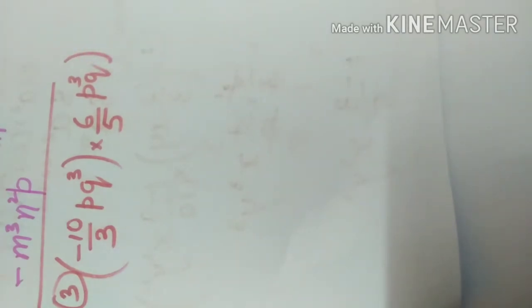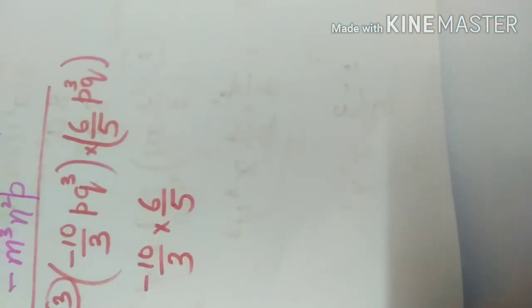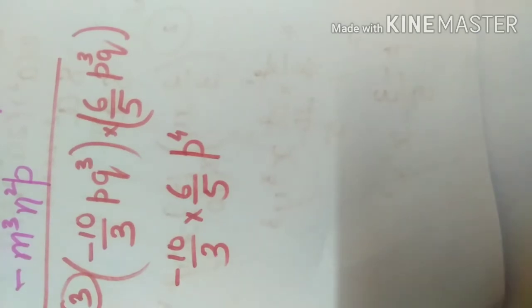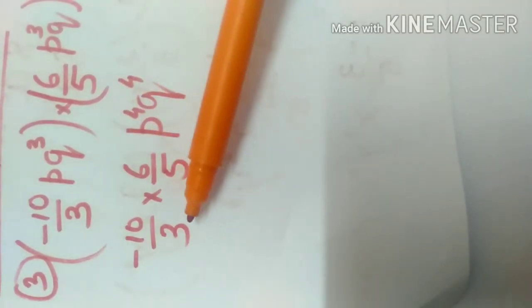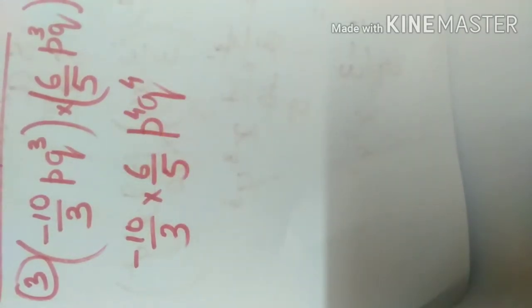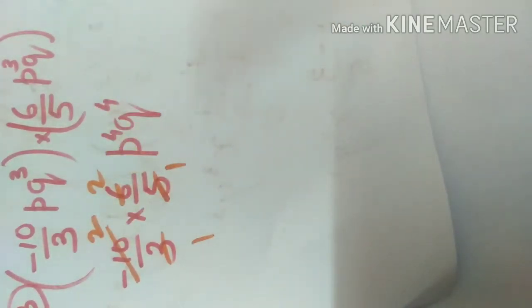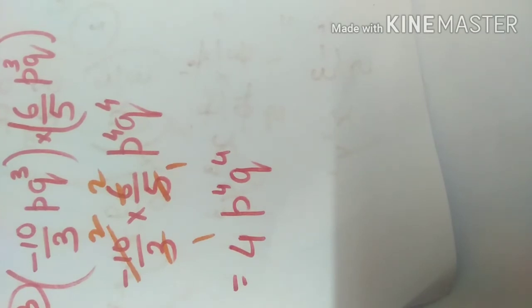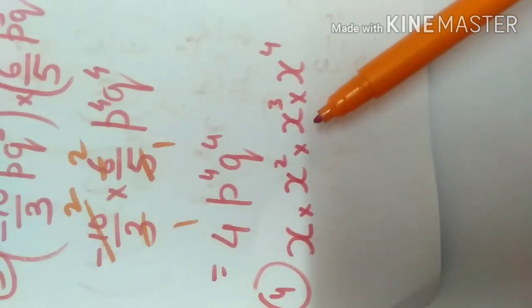The next part: multiply the constant terms together, then p into p cubed is p to the power 4, and q cubed into q is q to the power 4. Cancelling the constants — 6 cancels from 3 and 10 cancels from 5 — 2 into 2 is 4. The result is 4p to the power 4 q to the power 4.